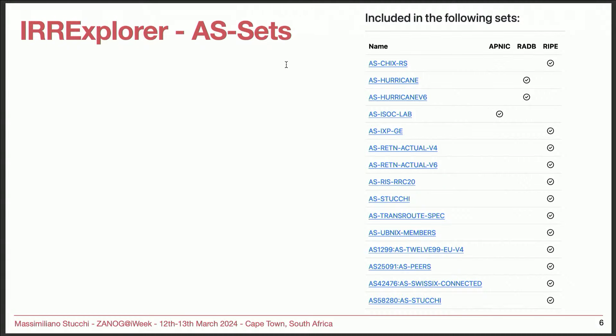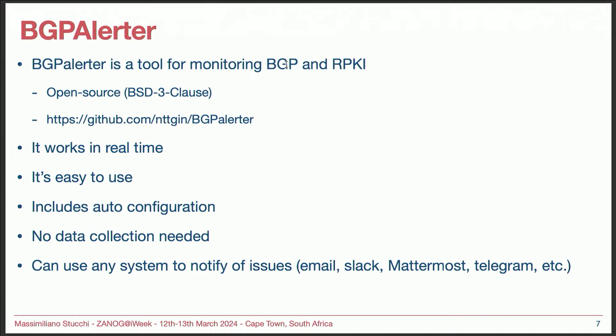Being included in different AS sets is also an issue in the long run — you can see an overview here. For example, my ASN is part of an AS set in APNIC, that's the ISOCLAB AS set, because I used to run that. In RADB I'm part of the Hurricane Electric AS set, and in RIPE I'm part of different AS sets for the different exchanges where I appear. So IRR Explorer is the entry point for looking at your health regarding Route objects and what your routing should look like if everything is done properly.